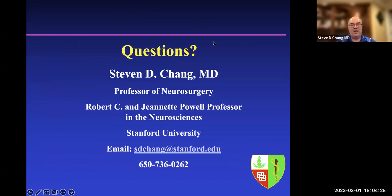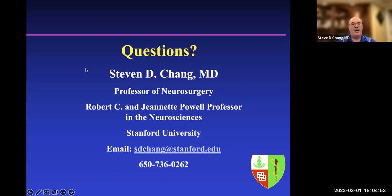Now I'll stop to answer questions. The first question is: what is considered a small meningioma? That's a great question because size depends on the location of the tumor. A one-centimeter tumor over the frontal lobe would be minuscule and not cause problems, but a one-centimeter tumor around the vision nerves behind the eye would be considered large for that area. Size is relative to location. For stereotactic radiation, we typically have a size cutoff — historically three centimeters in diameter, though we can now treat up to four centimeters depending on symptoms.